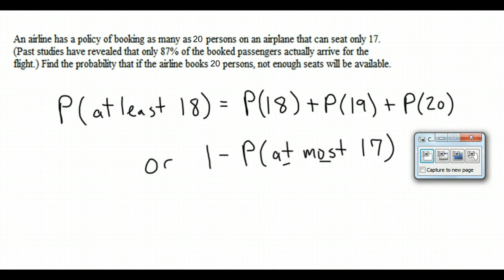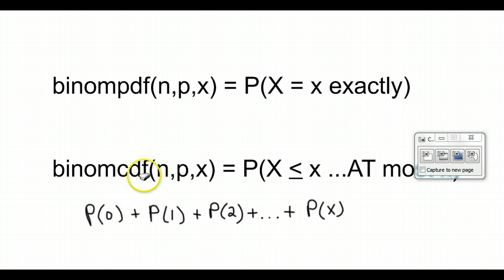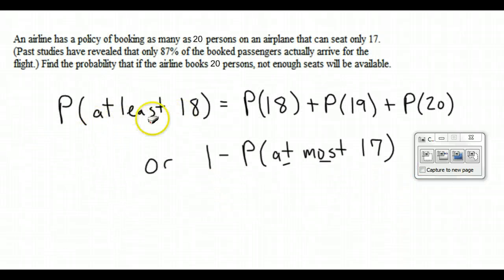Now, if you go back to what we just said, CDF starts at 0 and goes up to a number. It's for at most probabilities. This is an at least probability. So at least 18 means 18, 19, or 20. So we're adding those three together because of the ors. But notice that at least 18 is the same thing as 1 minus the probability of at most 17.